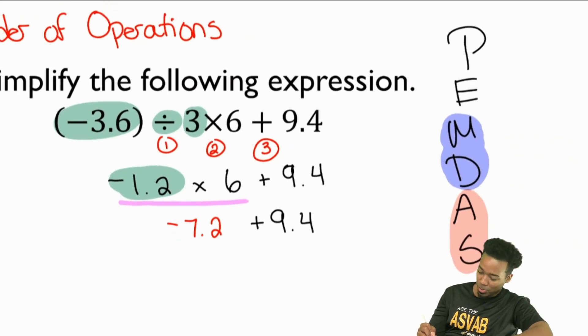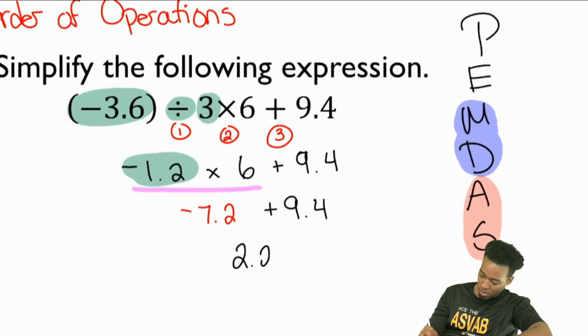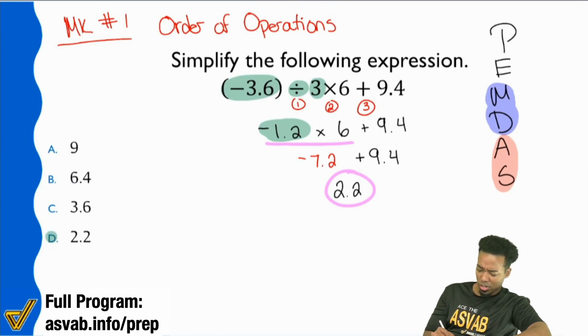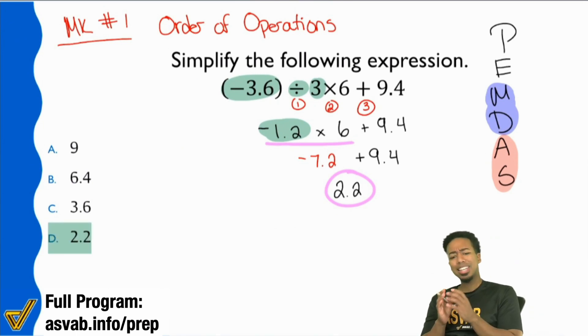And that's it. We have 2.2 as the final answer. And that's your answer. D. Wasn't too crazy, right? This one's not terribly crazy. We just really need to have a good grip on what our rule is.